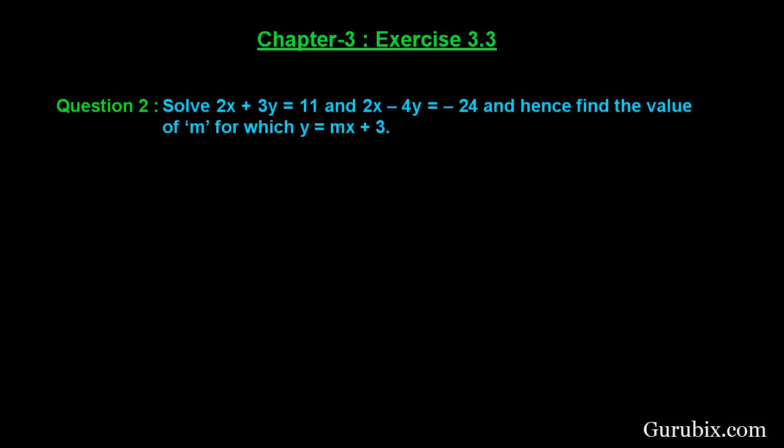Welcome friends. Let us solve question number 2 of exercise 3.3 of chapter 3. The question says: solve 2x plus 3y equals to 11 and 2x minus 4y equals to minus 24, and hence find the value of m for which y equals to mx plus 3. This is a very interesting and important question from an examination point of view. Let us see how to solve it.